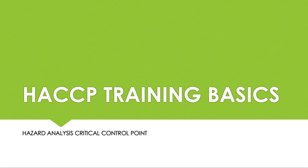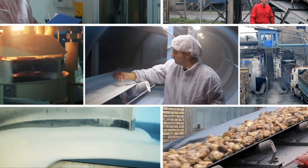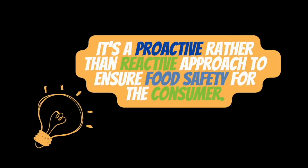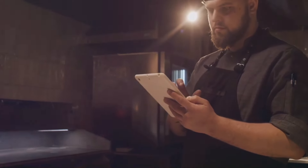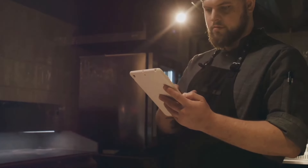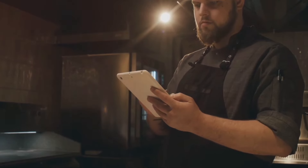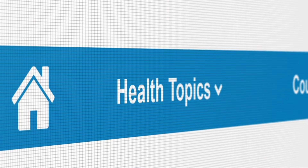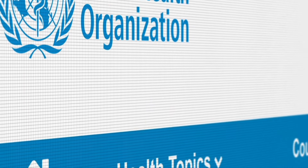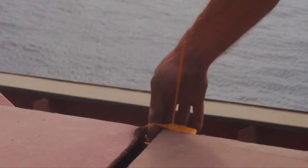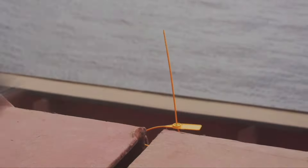Welcome to our HACCP Principles Training. HACCP is the backbone of our due diligence defence. It encourages food companies to be proactive when dealing with food safety issues. It has been a requirement in the UK since 2005 for food businesses to have a HACCP plan. It is a requirement from the World Health Organization, the Food and Agricultural Organisation, and the World Trade Organisation that we should use HACCP during trade.